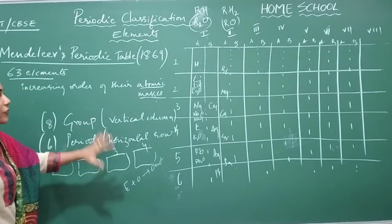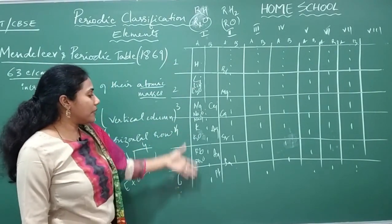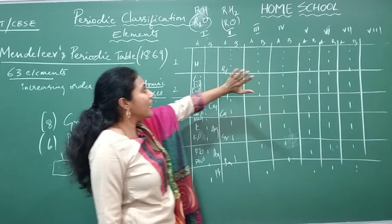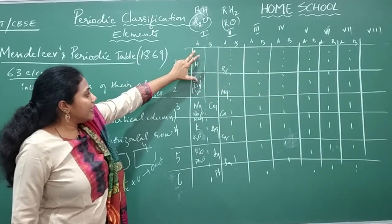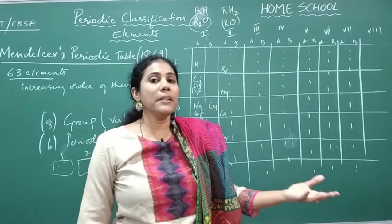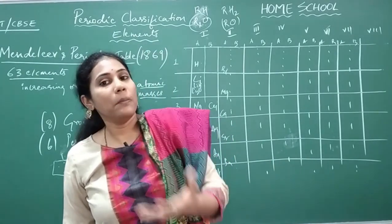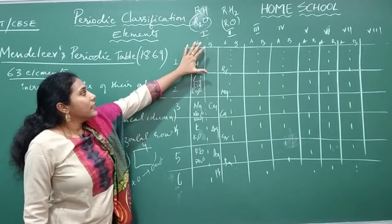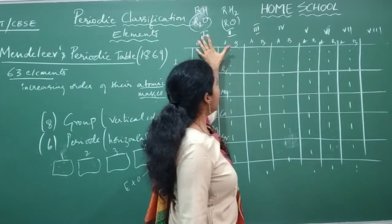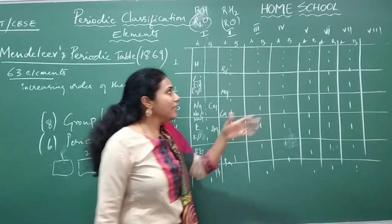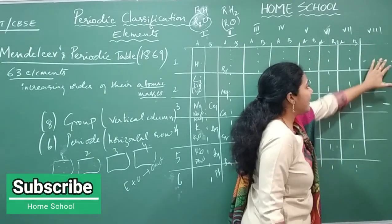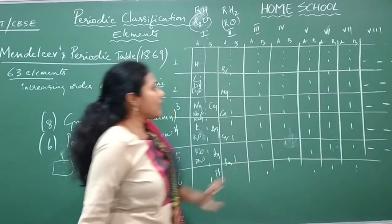Mendeleev studied the chemical and physical properties of every element, noted the properties, and kept elements with similar chemical and physical properties in one particular group. Each group is divided into A and B. The elements in group A correspond to what we now call S-block elements in the modern periodic table. Just remember: eight groups, six periods, and groups one through seven are divided into A and B.